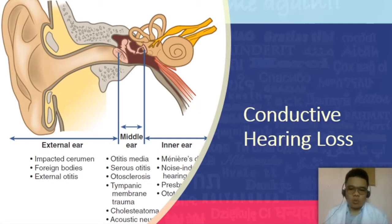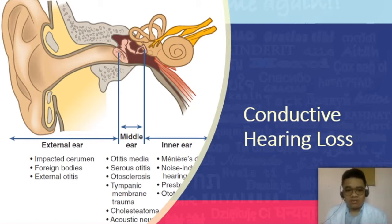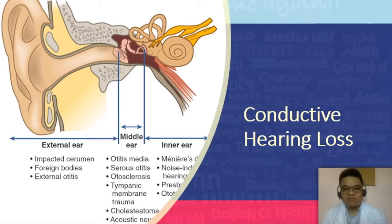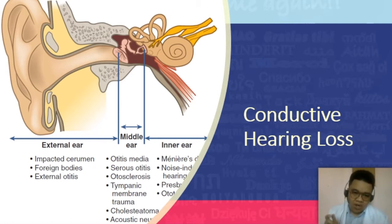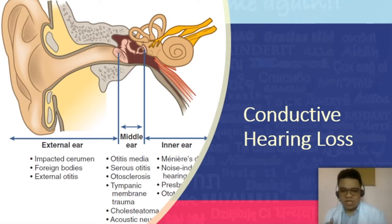Remember that there are two kinds of hearing loss: conductive and sensorineural hearing loss. When I talk about hearing loss, this is an interruption of the sound conduction from the outer ear to the sensory receptors in the cochlea. The problems in conductive hearing loss are found in your external ear and your middle ear.